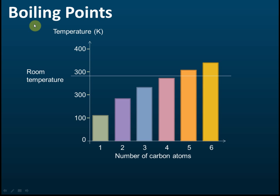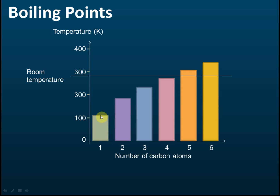This chart shows the boiling points of alkanes with different numbers of carbon atoms. This is the boiling point of the alkane with one carbon atom. The temperature unit is in Kelvin.